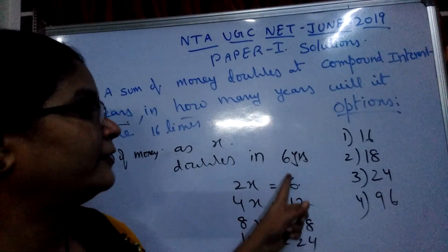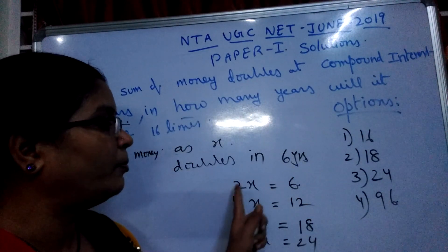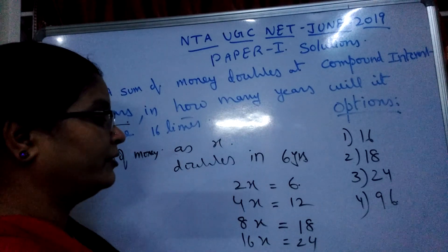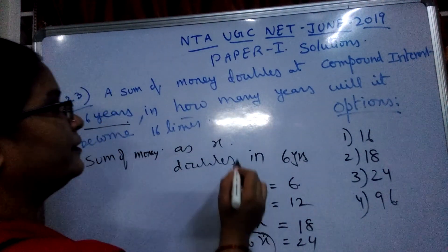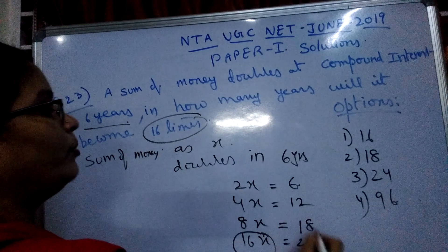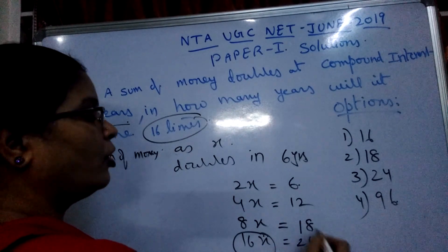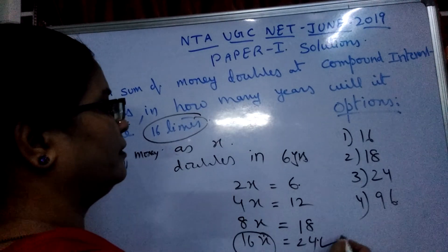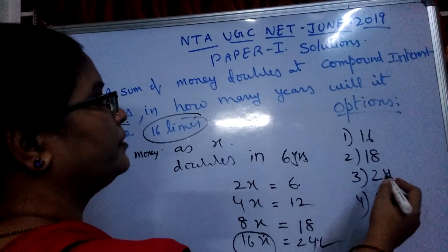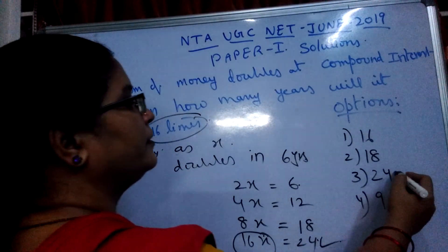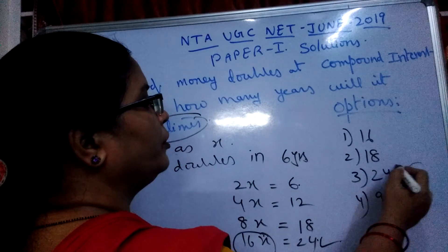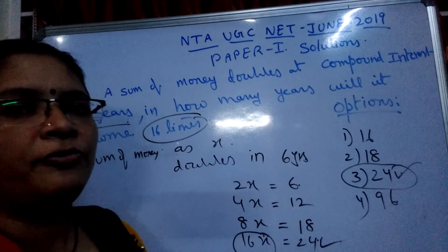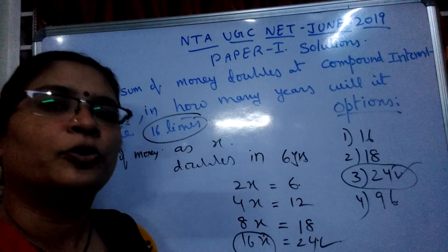Like that, we add 6 for each doubling. For each doubling, it requires 6 years. So to increase 16 times, it requires 24 years. Option 3 is the answer — 24 is the answer for this question.